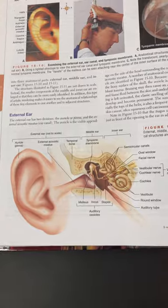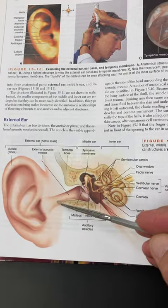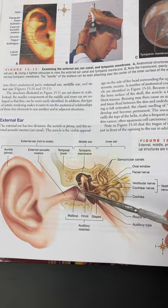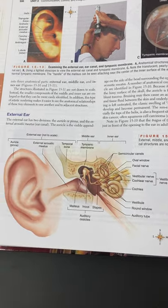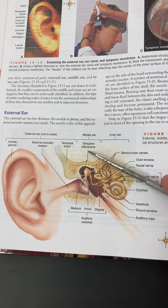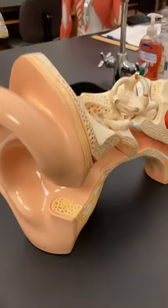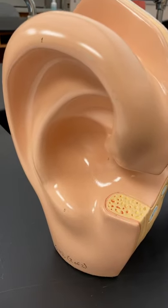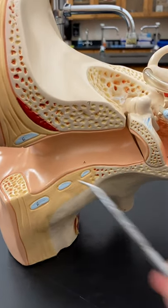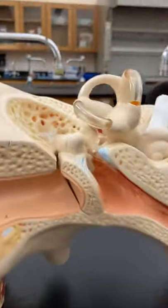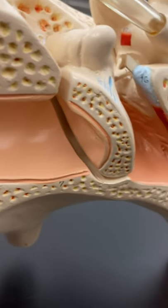Let's review with the diagram first. The external or outer ear is going to include the ear lobe, the ear canal called the external auditory meatus, and the eardrum part that's exposed to the outer air, also called the tympanic membrane. On your real ear model, we have the ear lobe, also called the auricle or pinna, the external auditory meatus or ear canal, and then the outer part of the eardrum or tympanic membrane — that's the external or outer ear.